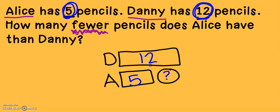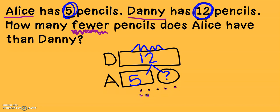My missing number is in my circle. If I think about this, just like if it were a math mountain, 12 is at the top of my mountain, so I'm not going to add 12 and 5, but 5 plus something gives me 12. I'm going to add on: 5, 6, 7, 8, 9, 10, 11, 12. Let's see how many that is: 1, 2, 3, 4, 5, 6, 7. That means that Alice has 7 fewer pencils than Danny.